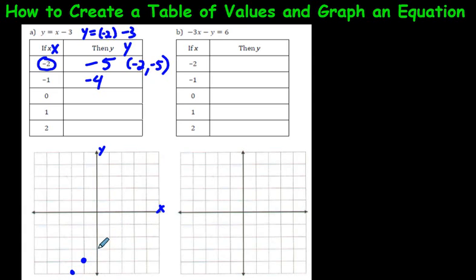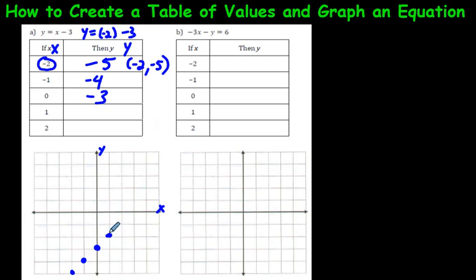You only need two plotted points to know what this line is going to look like. But let's keep going just to make sure. Put the 0 where you see the x: 0 minus 3 is negative 3. We're still staying along this line. Put a 1 where you see the x: 1 minus 3 is negative 2, so 1 across and down 2. For 2: 2 minus 3 is negative 1.